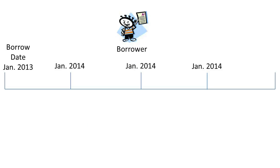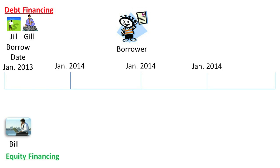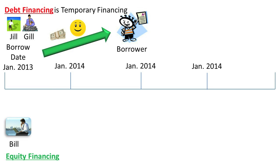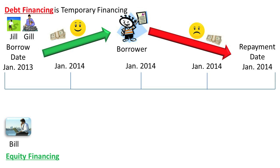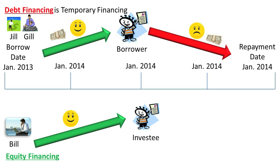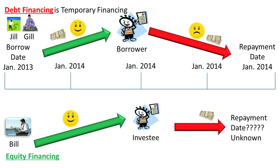From a borrower's perspective, debt financing tends to be riskier to a company's cash flows than equity financing, because debt financing is only temporary and must be repaid within a specific period of time. On the other hand, equity financing does not normally have a legally enforceable repayment horizon, and therefore is less risky to a company's cash flows — that is why it is often referred to as permanent financing.